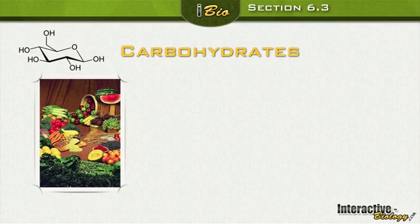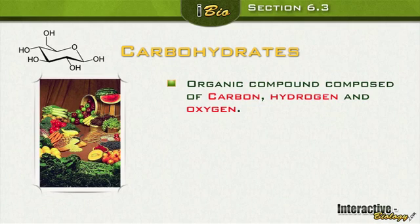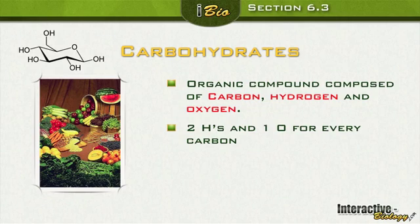Carbohydrates are found in fruits, vegetables, grains, bread, and potatoes. Chemically, they are organic compounds composed of carbon, hydrogen, and oxygen atoms — as seen in the glucose illustration, with C for carbon, H for hydrogen, and O for oxygen. The arrangement is two hydrogens and one oxygen for every carbon, which gives us the C₆H₁₂O₆ formula for glucose.